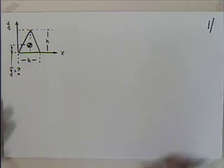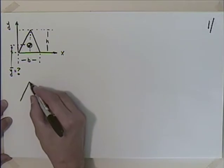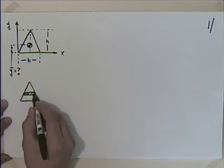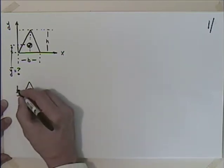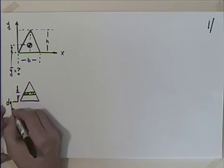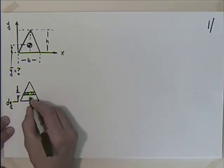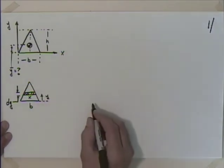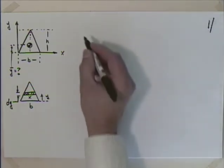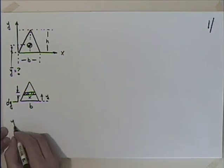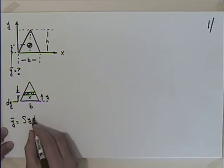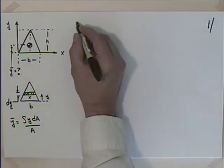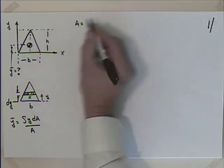To find Y-bar, I think the best way is to look at this and put our differential element on it — a differential element with height dy and base x, where the distance up is equal to y. So Y-bar is equal to the integral of y dA divided by A. I have to figure out what A and dA are. A is simply the area of the cross-section — that's the area of a triangle, base times height divided by 2.